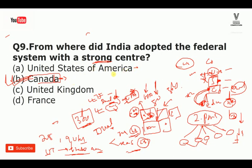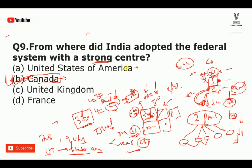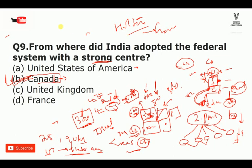Canada has a federal system with a strong center. From USA, India borrowed the Preamble. From France, India borrowed fraternity. Japan contributed the law on which the Supreme Court functions. The emergency suspension provisions came from Germany — as used under Hitler. From Canada came the federal system with strong center. Australia contributed the concurrent list concept.